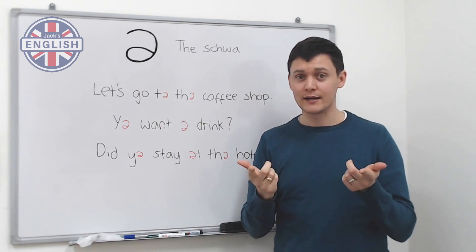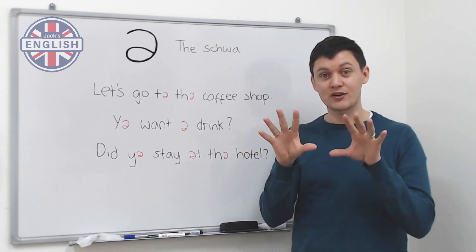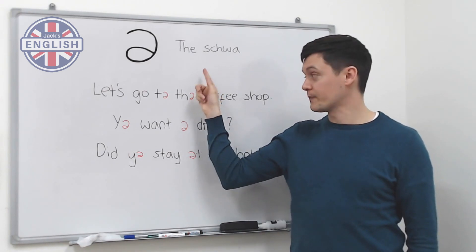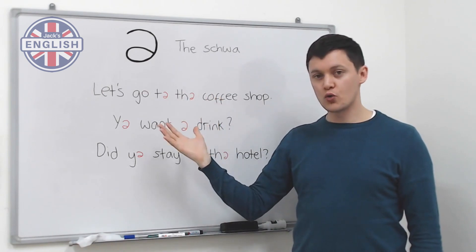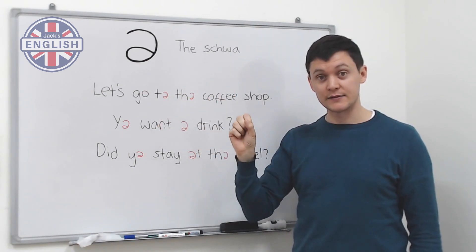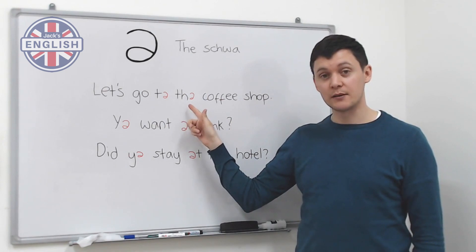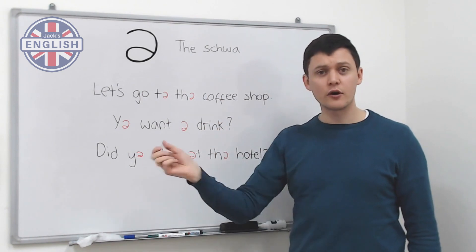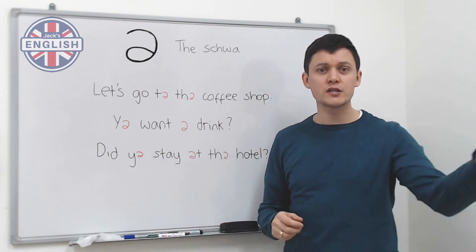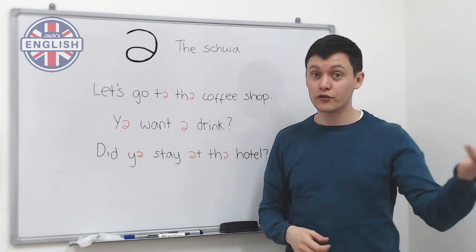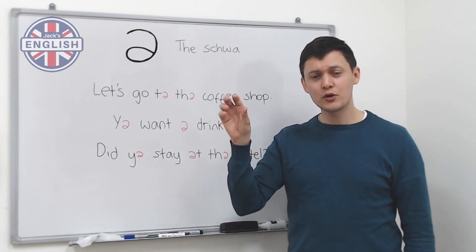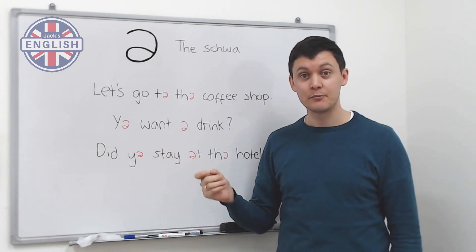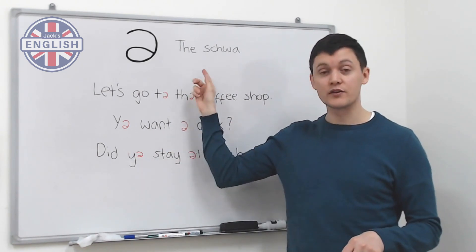If you say that quickly, it's quite hard because you'd be stressing everything. This is where the schwa is important — 'to the' almost always becomes 'to the' with a schwa. So it's 'let's go to the coffee shop,' 'let's go to the gym,' 'to the bank,' 'to the school.' You almost can't catch 'to the' when you listen to native speakers because it's unstressed with the schwa sound.